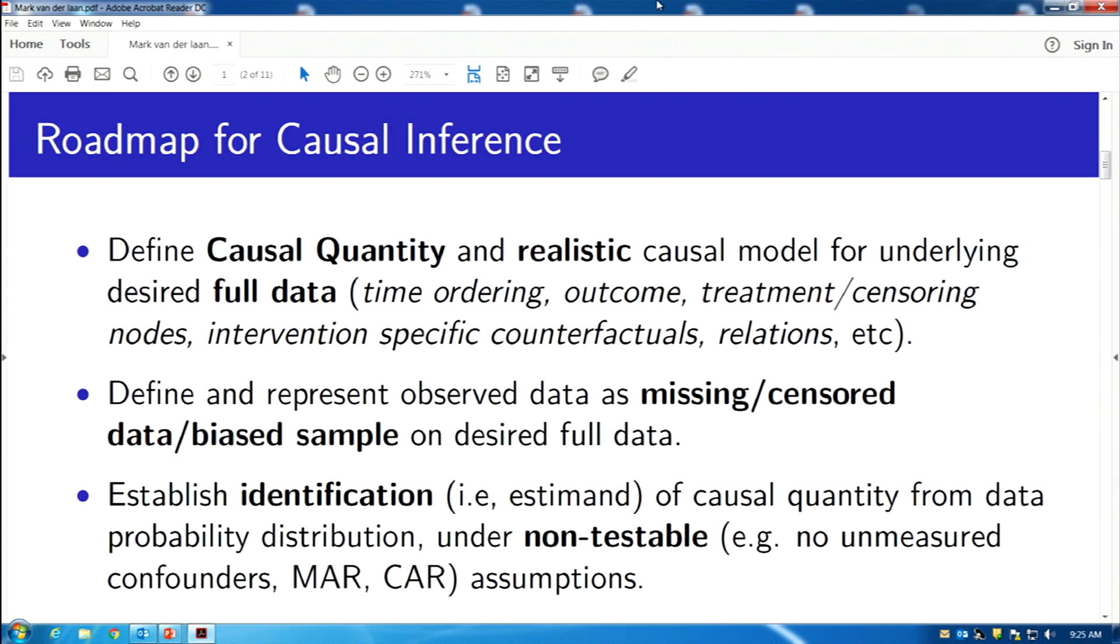Okay, now comes the real question, identification. Can we identify our causal question from the observed data distribution? Again, there's a whole field for that, a lot of experts, because it does require a mathematical solution. And that often only works under certain assumptions. And these are often non-testable assumptions, such as the no-unmeasured confounder assumption, missing-at-random assumption, and so on.